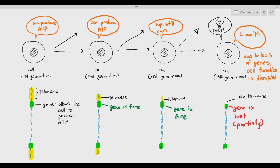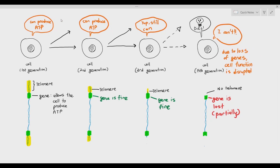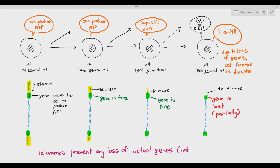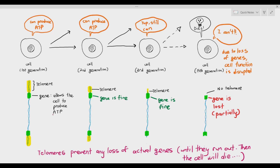That is the limit. That is why specialized cells such as skin cells cannot undergo mitosis forever — they cannot undergo the mitotic cell cycle an infinite number of times. It is impossible due to the progressive loss of the telomeres. If the telomeres are lost a little bit, it's fine, as we can see in the first, second, and third generation. But once all the telomeres are gone, the loss will spill over and the genes will start to be lost as well. Therefore, it will disrupt the function of the cell and the cell dies off. The telomeres prevent any loss of actual genes until the telomeres run out, and once they run out, the actual genes are lost and the cell will die.